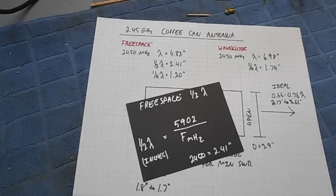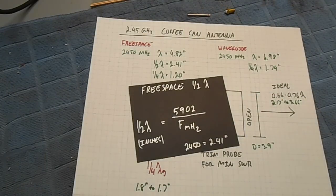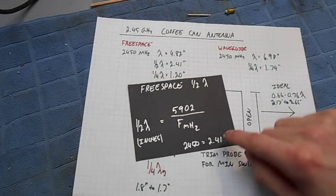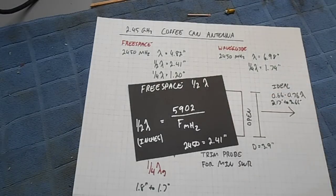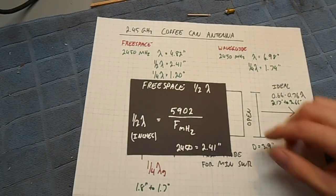To calculate the half-wave wavelength of a signal in free space, use the equation 5902 divided by the frequency in megahertz. So for 2450 megahertz, half-wave wavelength is 2.41 inches. Divide that by 2 again to get the quarter wavelength. Free space wavelength will be 1.2 inches.